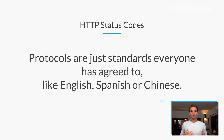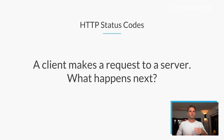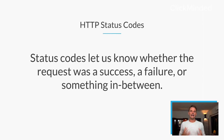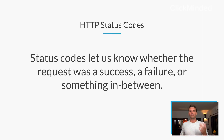You make this request using what we call the HTTP protocol. Protocols are really just standards that everyone on the internet has agreed to - it's no different than English or Spanish or Chinese, it's a language that we've all agreed to. A client makes a request to the server - what happens next? Status codes let us know whether the request was a success, a failure, or something in between. That's what an HTTP status code is.